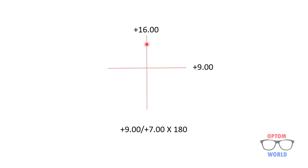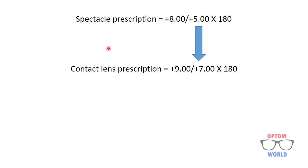From this optical cross I calculate the contact lens prescription. Taking plus 9 as the sphere, the difference between plus 9 and plus 16 is 7, and since we are going towards the positive side, the cylinder is also positive with axis 180. The final contact lens prescription is plus 9 sphere with plus 7 cylinder at axis 180. So spectacle prescription plus 8 with plus 5 cylinder at axis 180 at BVD of 14 mm converts to plus 9 sphere with plus 7 cylinder at axis 180 for a contact lens.